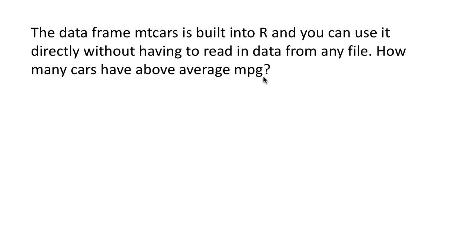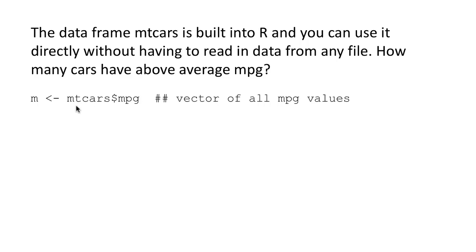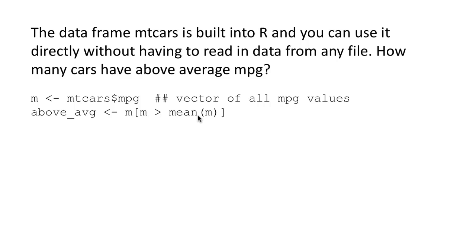Now the question is: how many cars have above-average miles per gallon? MPG is a column in that data frame. Taking an easy step-by-step approach, we first get all the MPG values into a vector: M is assigned mtcars$MPG. Then above_average is M[M > mean(M)], because above-average MPG means M is greater than mean of M. This gives back only those elements for which the expression is true, since M > mean(M) produces a Boolean vector. To find how many cars have above-average MPG, we say length of that result.